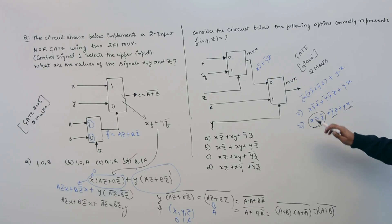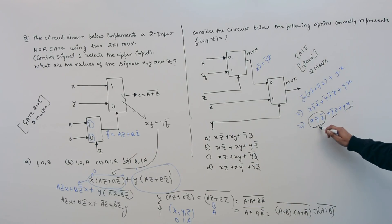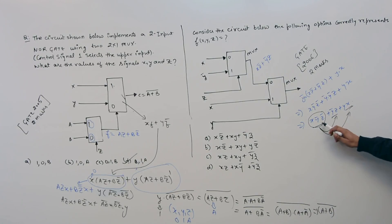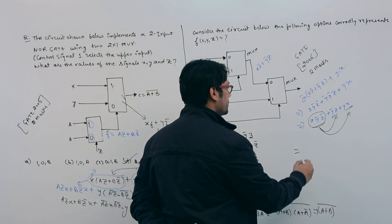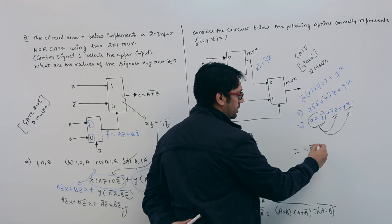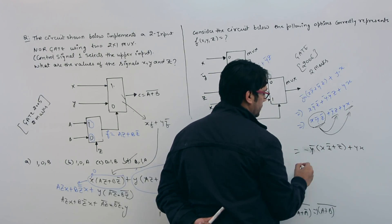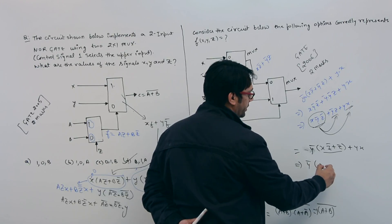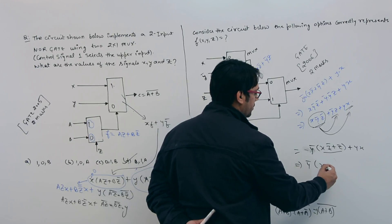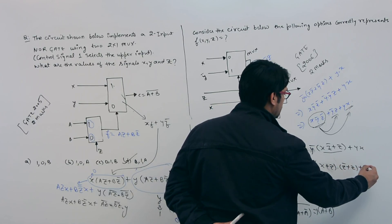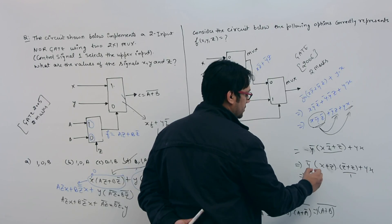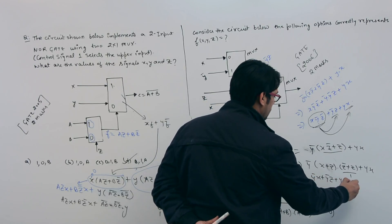To minimize, we can either combine this three-literal term with one of the two-literal terms. Taking X as common between the first and third terms: X·(Y complement·Z complement + Y) plus Y complement·Z. This distributes to X·(Y complement + Y)·(Z complement + Y) plus Y complement·Z, which becomes X·(Z complement + Y) plus Y complement·Z, giving X·Z complement + X·Y plus Y complement·Z.